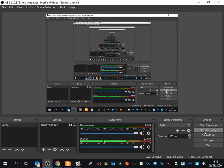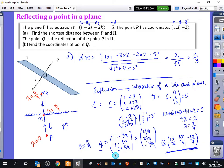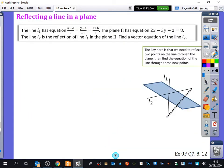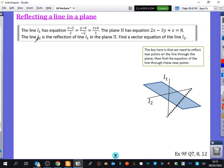On to the very last skill that we've got for vectors. We're going to be reflecting a line in a plane. This is the diagram that I've got drawn here. We've got a line and a plane, and L2 is the reflection of that line in the plane. We're going to find the vector equation of the line.